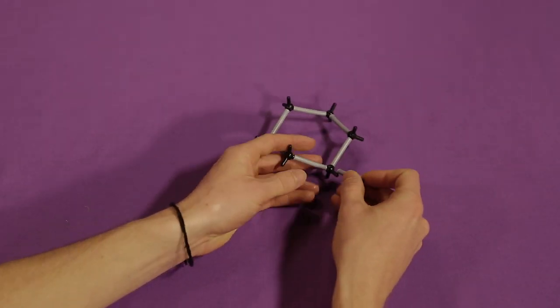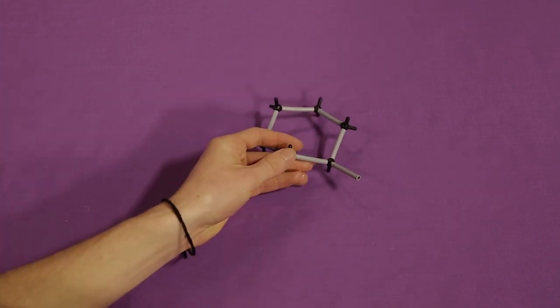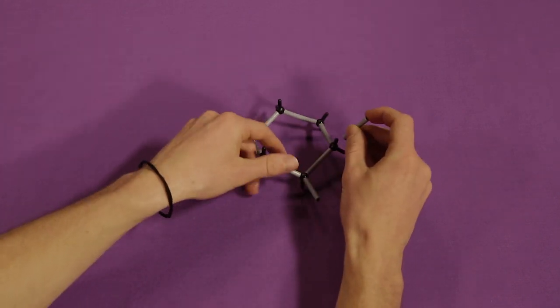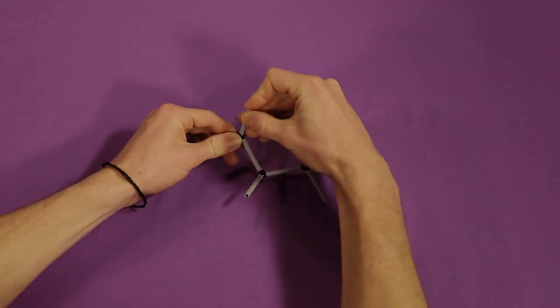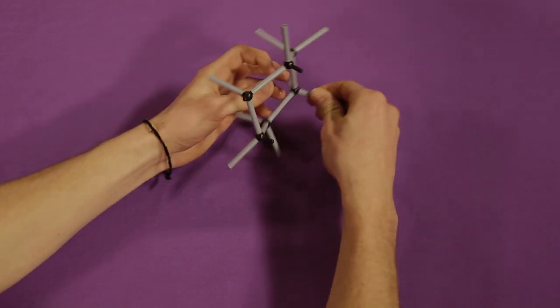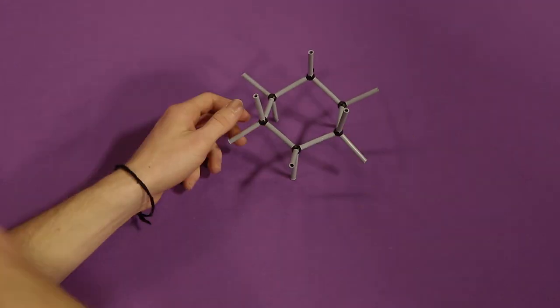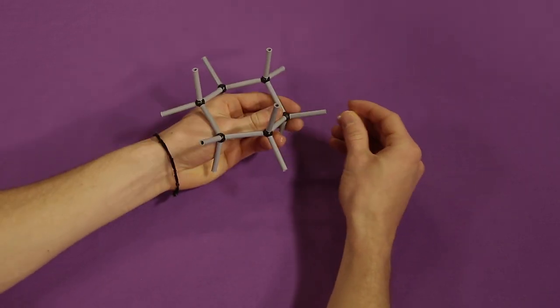After creating a ring of carbon atoms, attach two more bonds to each carbon. Attach a hydrogen atom on the other end of each bond.